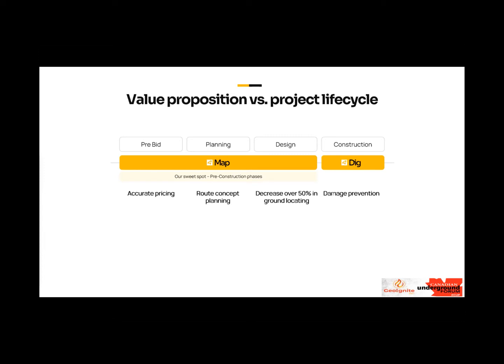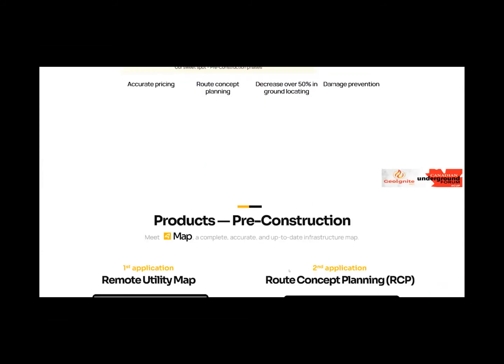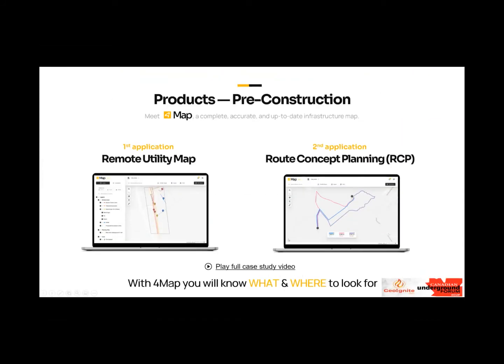From the design perspective, because of the type of technology we're using, we're able to see if there are any changes from the point of design all the way to the point where it's issued for construction — because it often takes two, three, four years from initial design to construction. On the construction and damage prevention side, we have a command and control asset management program called 4DIG, which is really the icing on the cake — taking all the information and building a 360-degree live map.